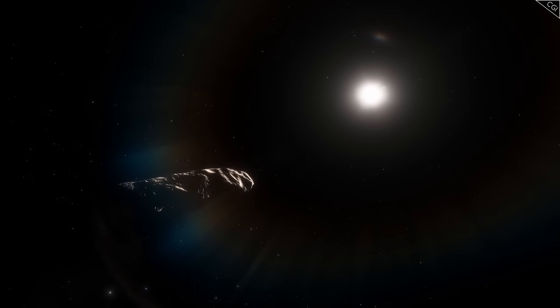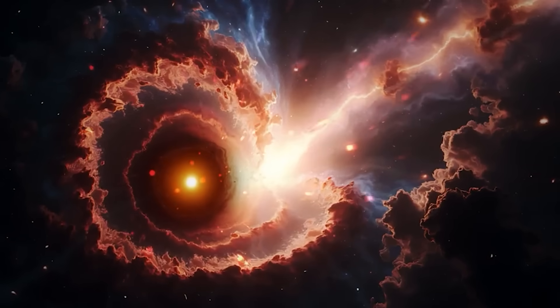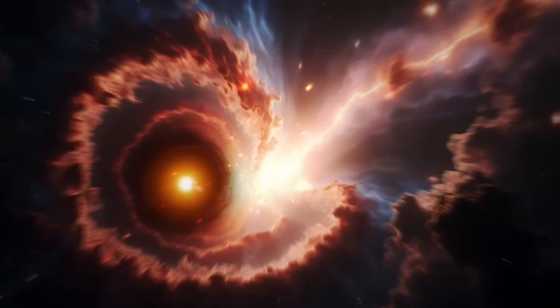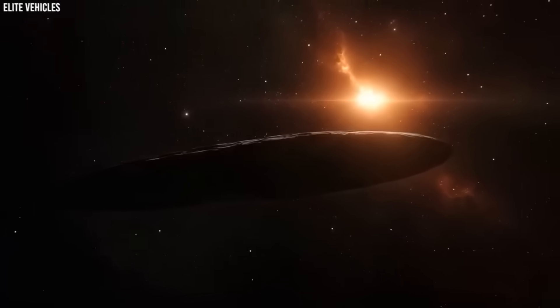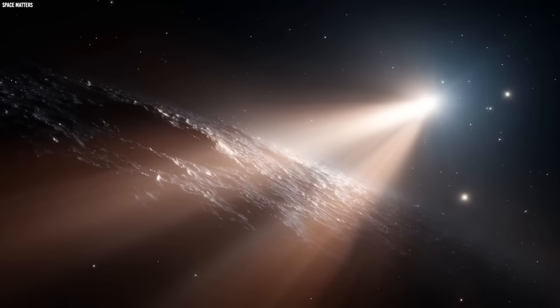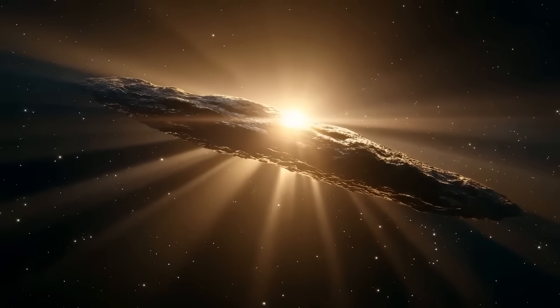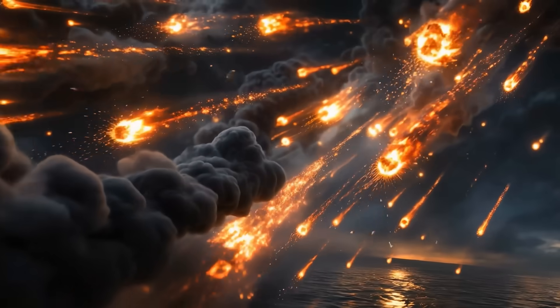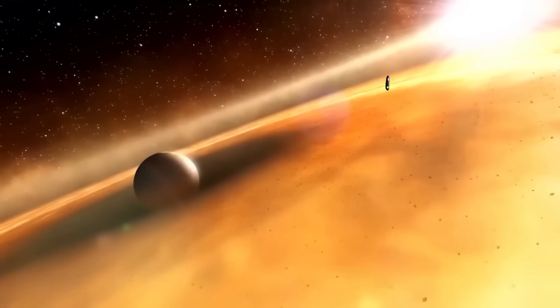As 3i Atlas continues its silent glide through the solar system, the world finds itself caught between two versions of reality. The one we grew up learning, a universe governed by predictable rules, comfortable laws, and familiar physics, and the one this object is forcing us to confront. A universe where something millions of years older than us can slip through our solar system without warning, without a tail, without a cloud of vapor, without obeying gravity, without revealing its structure, without giving us the comfort of understanding. Something that accelerates when no force is pushing it. Something that glows with a blue temperature beyond what sublimating dust can produce. Something that should be exploding into a billion shards, but remains intact, untouched, unbroken, as if the sun itself cannot disturb its silence.